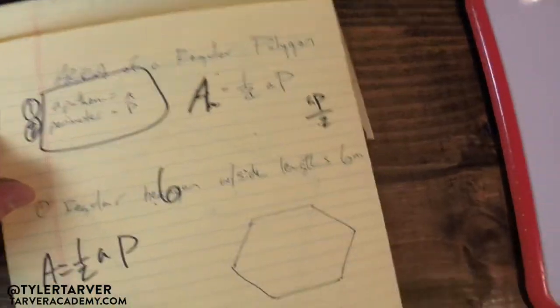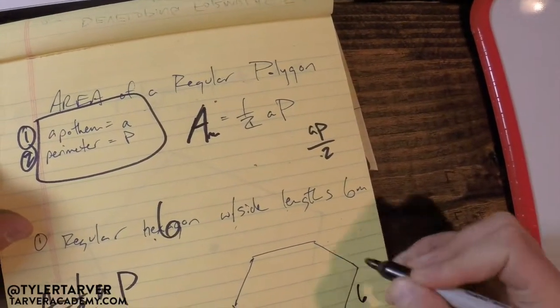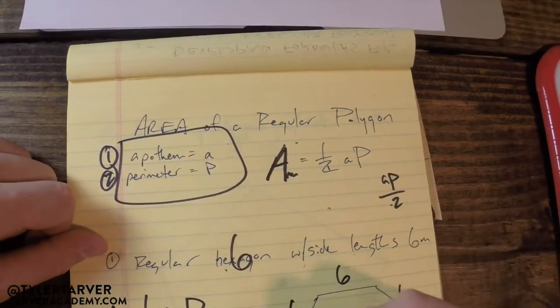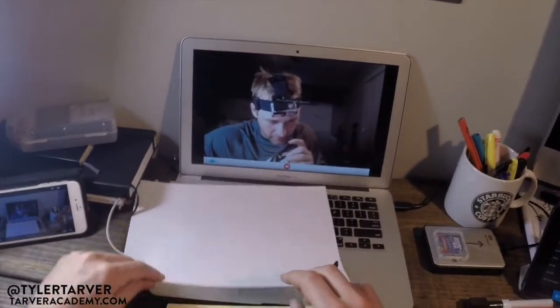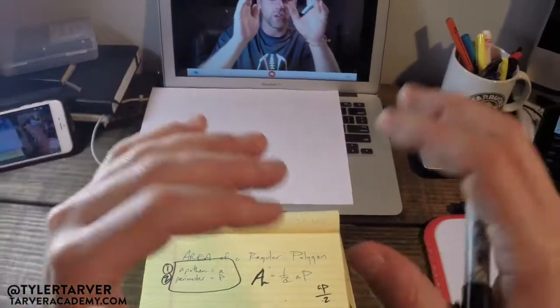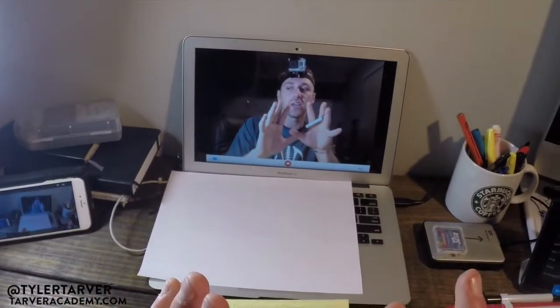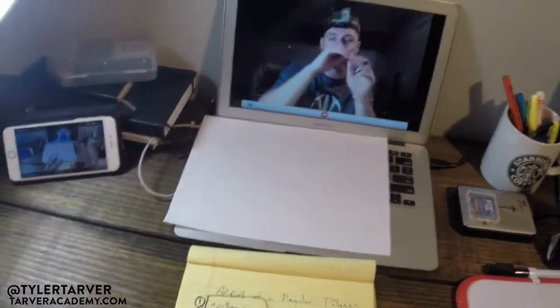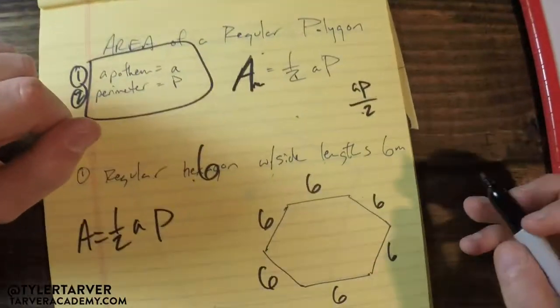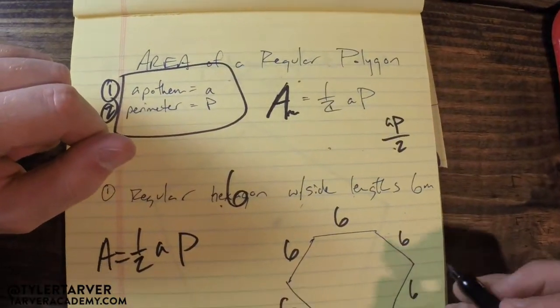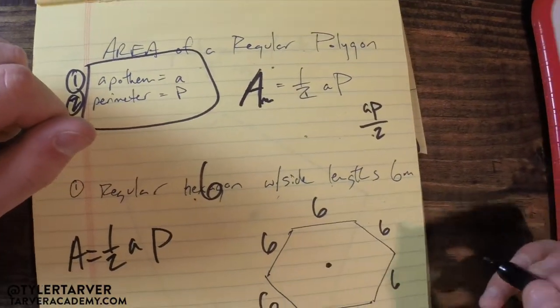So let's use our side lengths. So if this is six, all these are six, correct? I always recommend you start with drawing whatever the shape is that you're doing, and then you can start labeling everything. It makes it so much easier. So our side length is six. We've got our center here.